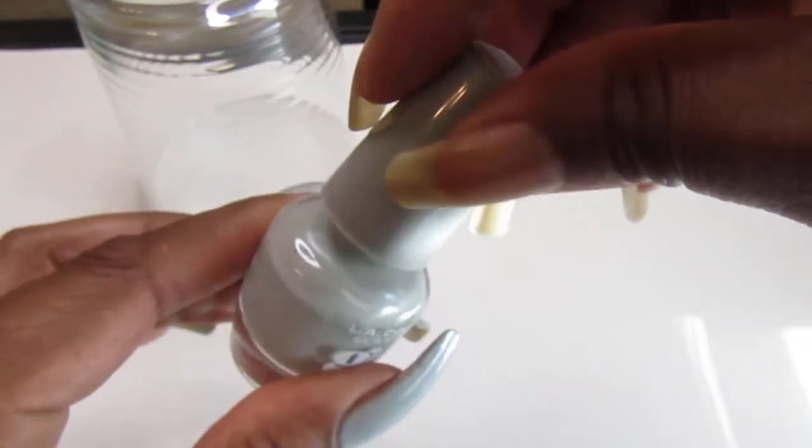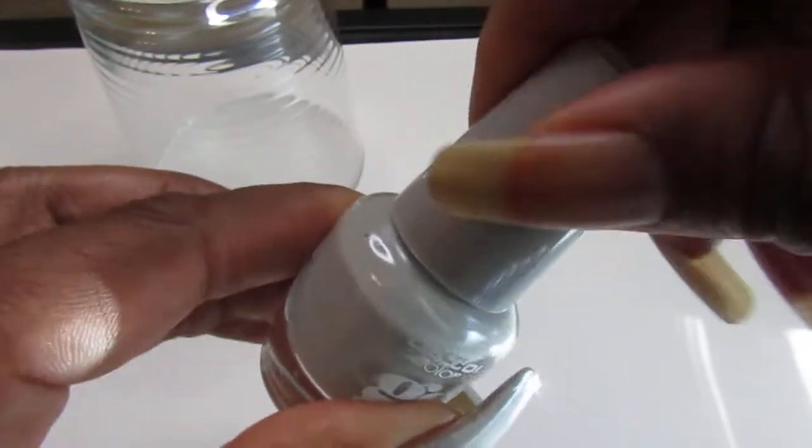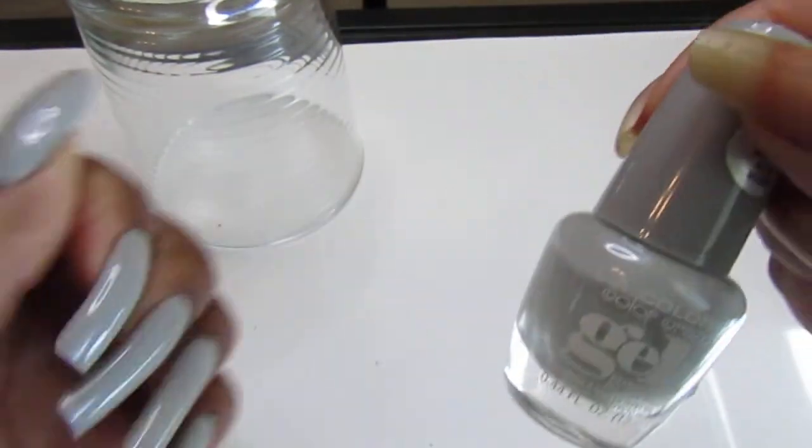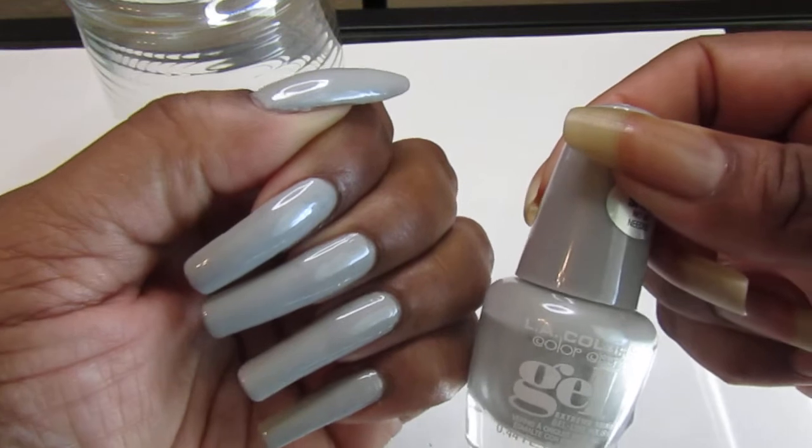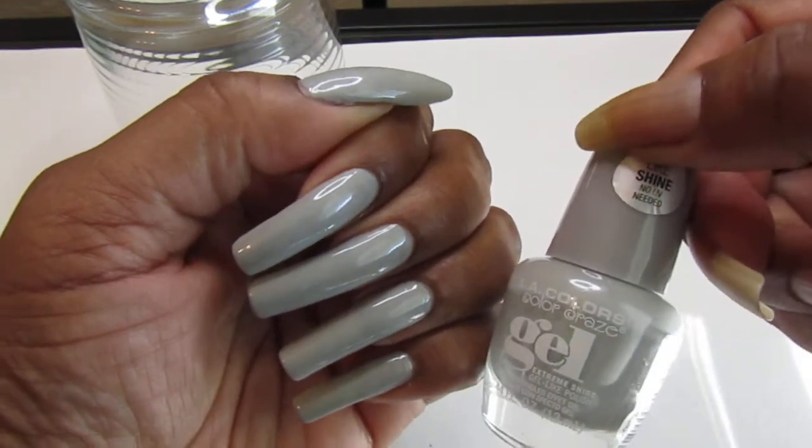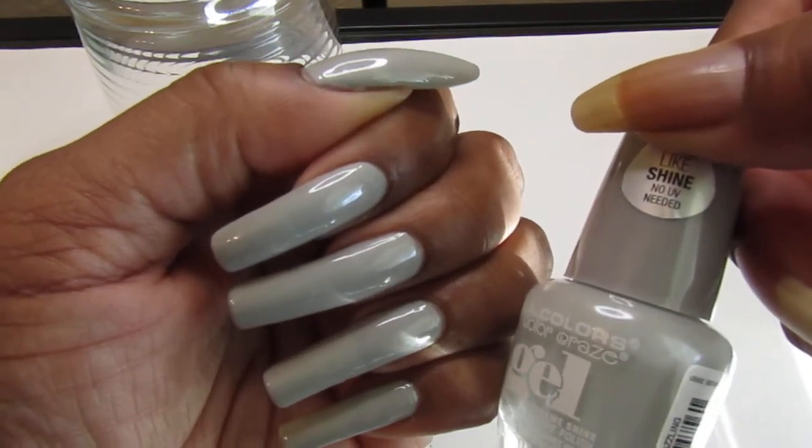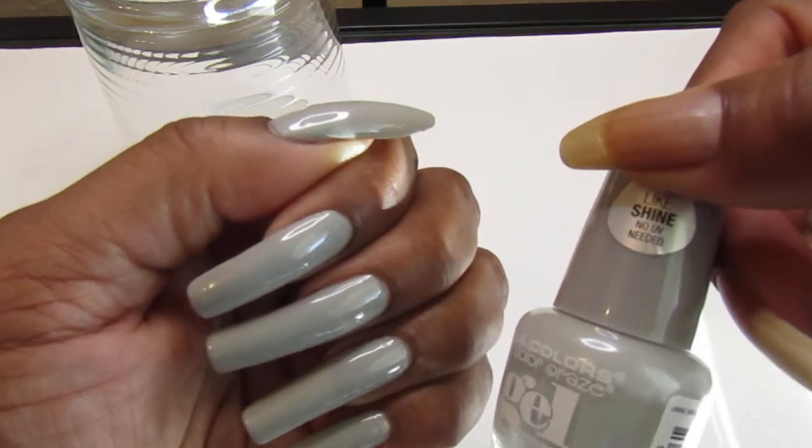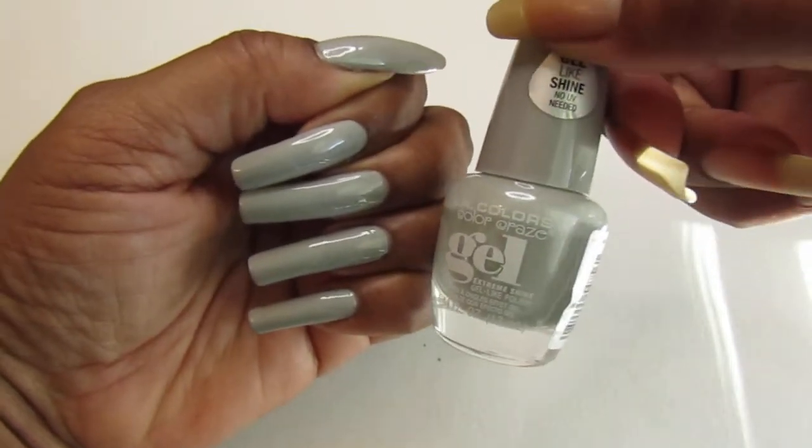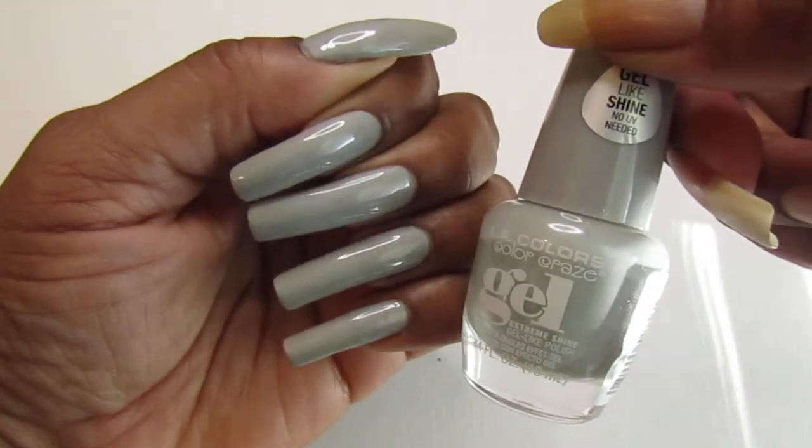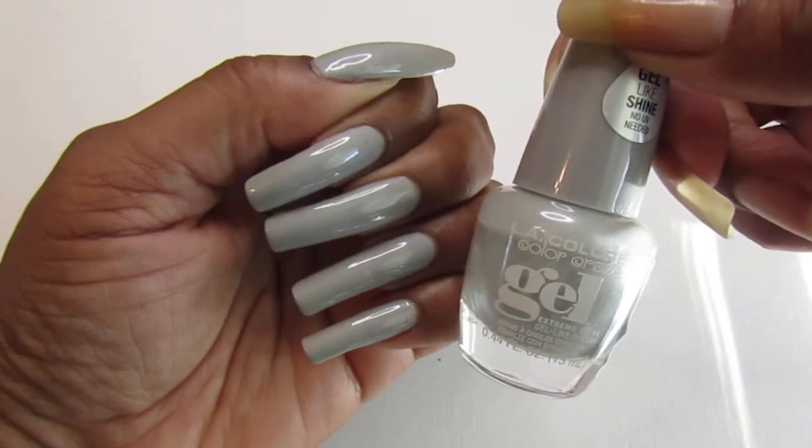Two coats of this bad boy, the LA Colors gel. And that is what it is giving us. Look at the coat so you guys can see a better picture of it. There we go. But this is two coats.